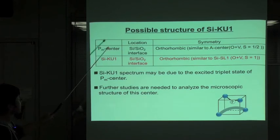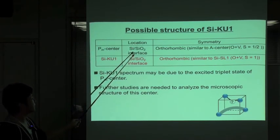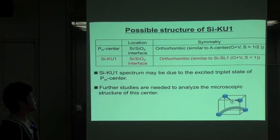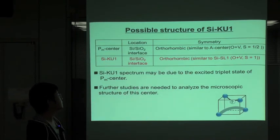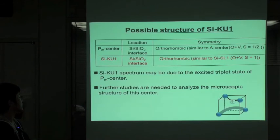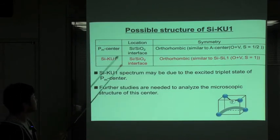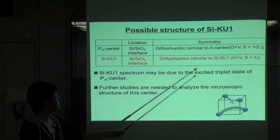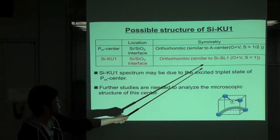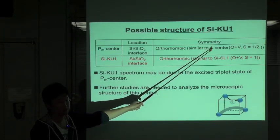The PM center locates at the Si-SiO2 interface, and this PM center has a similar symmetry to the A center. And KU1 center also exists at the Si-SiO2 interface. And this symmetry of KU1 is similar to SI-SL1, and SI-SL1 is the excited triplet state of A center.